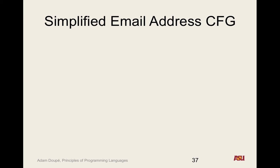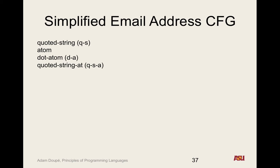There are five non-terminals: a quoted string (a string delimited by double quotes), an atom, a dot-atom (an atom with a dot in it, useful for domain names), a quoted-string-at (a quoted string followed by the at symbol, kind of the first part of an email address), and a dot-atom-at (a dot-atom followed by the at sign). You can add a new symbol onto the end of a token so it matches via longest prefix matching.